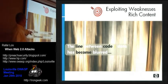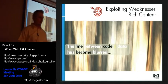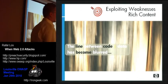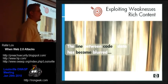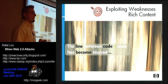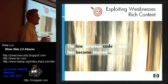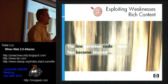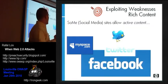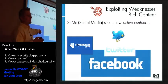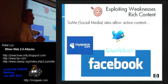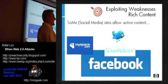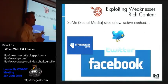Let's talk about rich content. The line between code and data has become just ridiculously blurred. Up until about a couple years ago, we could actually tell the difference between what is code and what is data. Now code is data, which is a bad thing, because now we can't figure out how to protect it from itself.